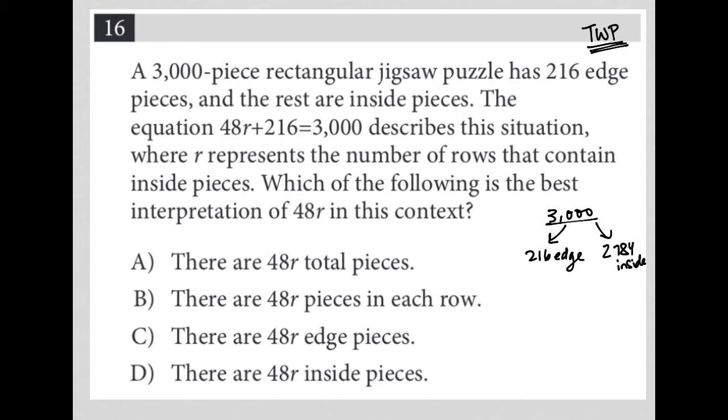The next sentence says the equation 48R. Whenever a question gives me an equation, I always write it down for myself. So 48R plus 216 equals 3,000 describes this situation where R represents the number of rows that contain inside pieces. So R is rows. Which of the following is the best interpretation of 48R in this context?